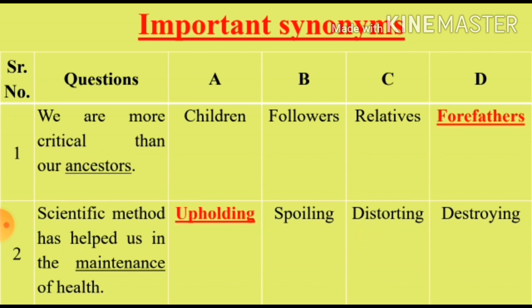Option D, Forefathers, is the right answer for Question 1. Question 2: 'Scientific method has helped us in the maintenance of health.' We will see the synonym for the word 'maintenance'. Option A: Upholding (maintain karna). Option B: Spoiling (kharaab karna). Option C: Distorting (misstate karna). Option D: Destroying (kharaab karna). Options C and D are irrelevant. Option A, Upholding, is the right synonym for Question 2.